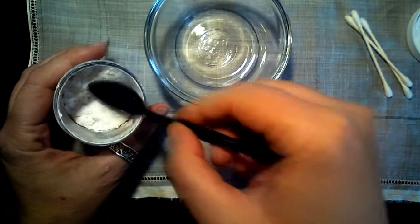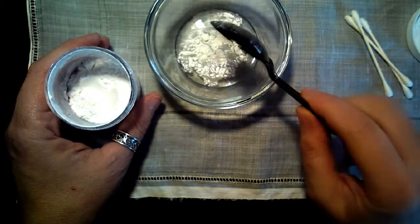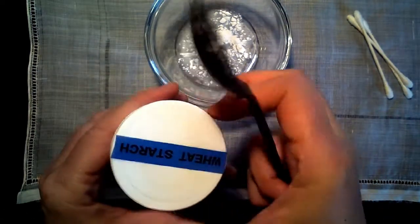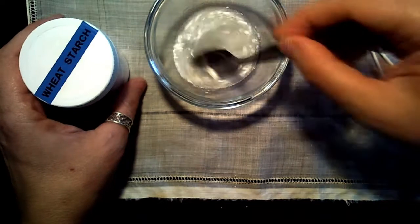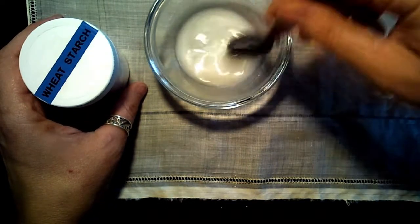The second trick is I use wheat starch to keep the hem from unraveling once it's been cut. So the proportions are roughly like one to seven to one to ten water to wheat starch.